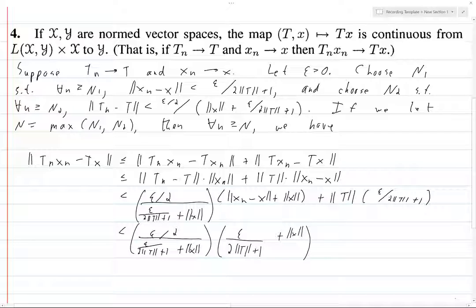Then this thing—we've got this 2 norm t plus 1, and we've got this norm t here, so this is going to be less than epsilon over 2.